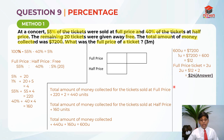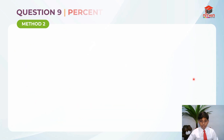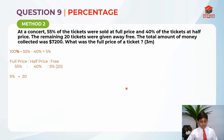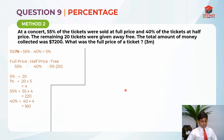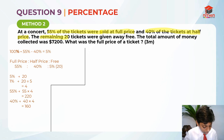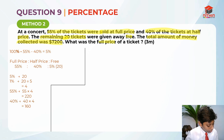Let's move on to method 2. I'll show you how to solve the question from another perspective. It's the same question and the first few steps are the same — we list them down. 55% of the tickets were sold at full price; the remaining 20 tickets were given away free; the total amount collected was $7,200. What was the full price? The free tickets are 5%, so 1% represents 4. Full price tickets: 220, half price tickets: 160.